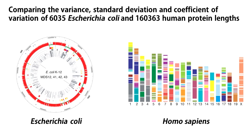As an example, here I am going to compare the variance, standard deviation and coefficient of variation of 6035 E. coli and 160,363 human protein lengths using the R statistical package. Please watch the video on frequency distribution to learn how to download full proteomes from the UniProt database.